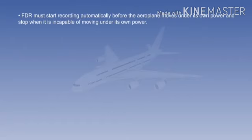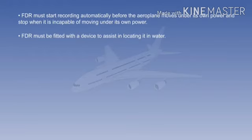The flight data recorder must start automatically before the aeroplane moves under its own power, and stop automatically after it is incapable of moving under its own power. The flight data recorder must have a device, such as a sonar locator beacon, to assist in locating it in water.